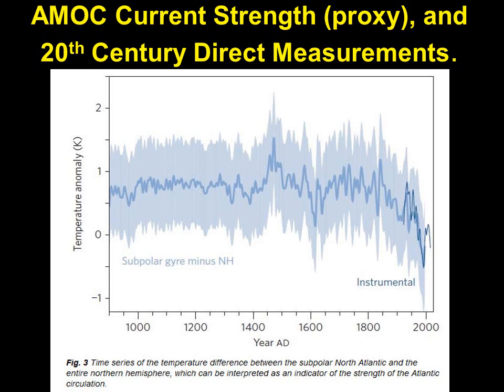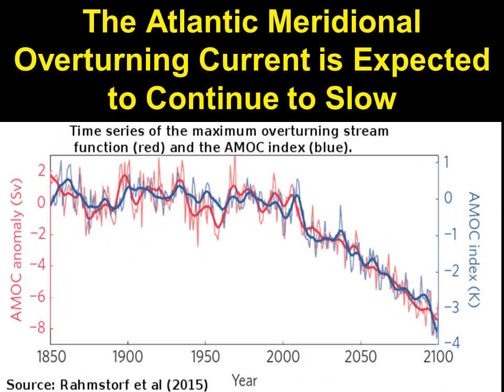The subpolar gyre minus the Northern Hemisphere average is a decent proxy for the strength of the AMOC. We have measurements through indirect means — sediments and so forth — showing it looked pretty stable, with some wiggle during the Little Ice Age. But heading into the fossil fuel era we see significant weakening. We did have a rise back up, but we're heading back down again. Predictions show the AMOC is expected to go through a pretty much straight-line decline up to the year 2100.